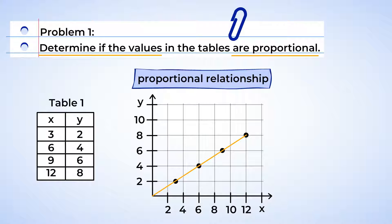Next, we want to see if the line passes through the origin, or where the x and y axes cross. Here is the origin, at 0, 0, and here is our line passing through the origin. These values are proportional.